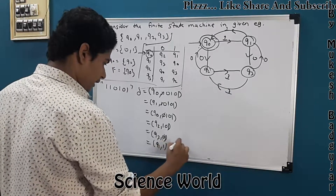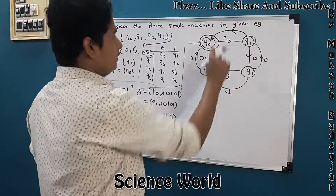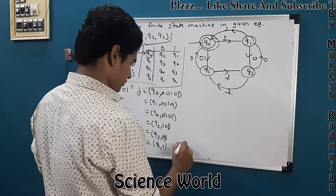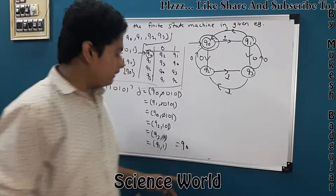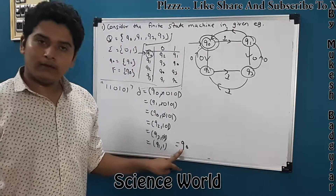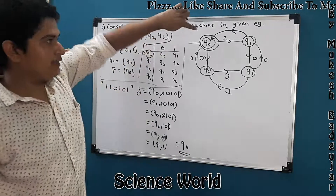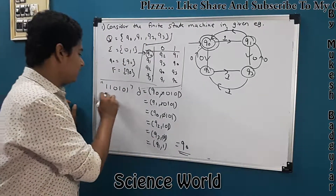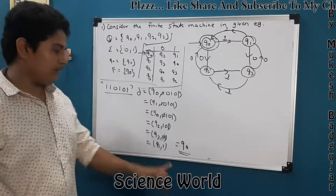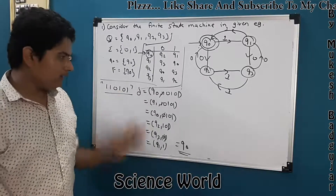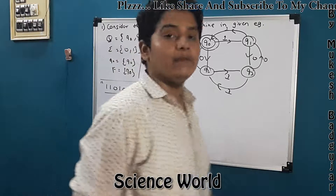Then Q1 on 1 goes to Q0. We have reached Q0, which is our final state. Therefore this string 110101 is acceptable by this finite state machine.